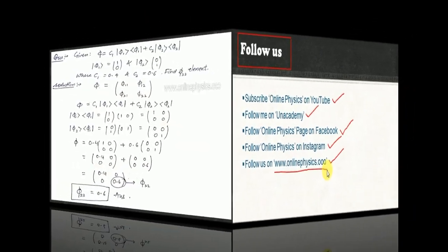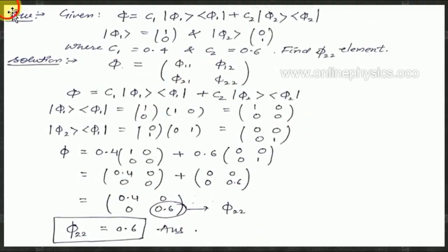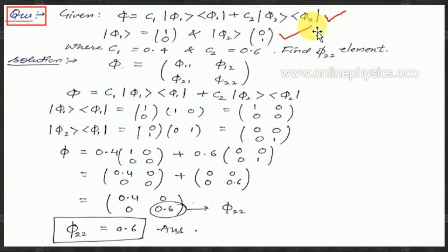Now in the first question, we have given phi which is equal to c1 times the ket-bra product of phi1, plus c2 times the ket-bra product of phi2, where ket of phi1 equals (1, 0) and ket of phi2 equals (0, 1). The constants are c1 = 0.4 and c2 = 0.6, and we have to find the phi22 element.